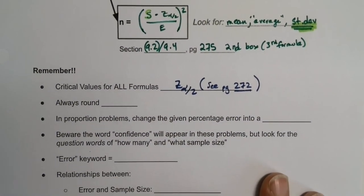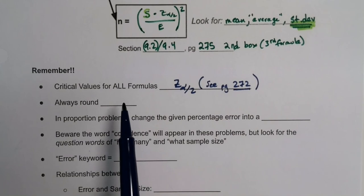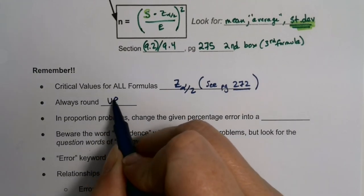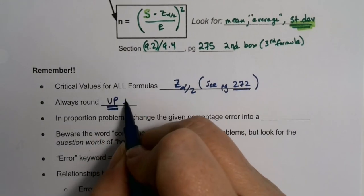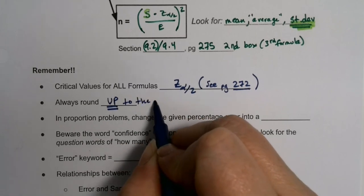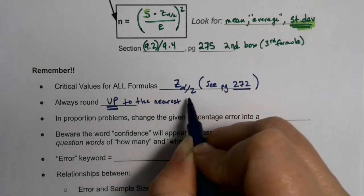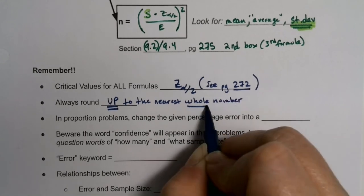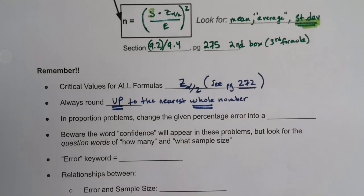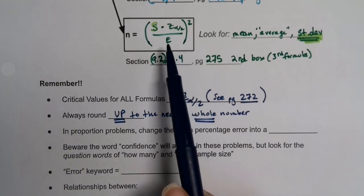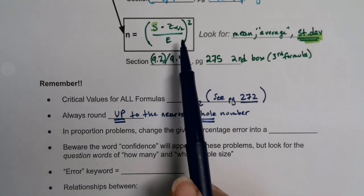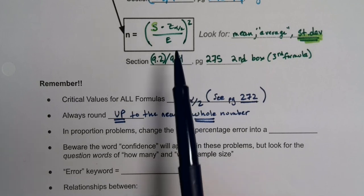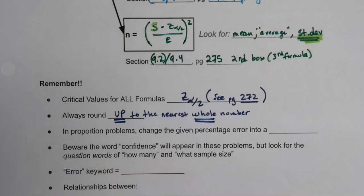All of these formulas always round up, no matter what, to the nearest whole number. So even if your result is something like 22.03, you round up to 23. You must always round up — that's just the nature of these sample size questions.